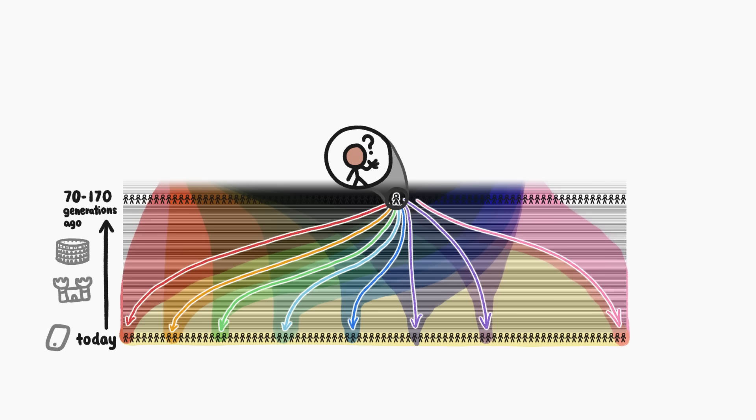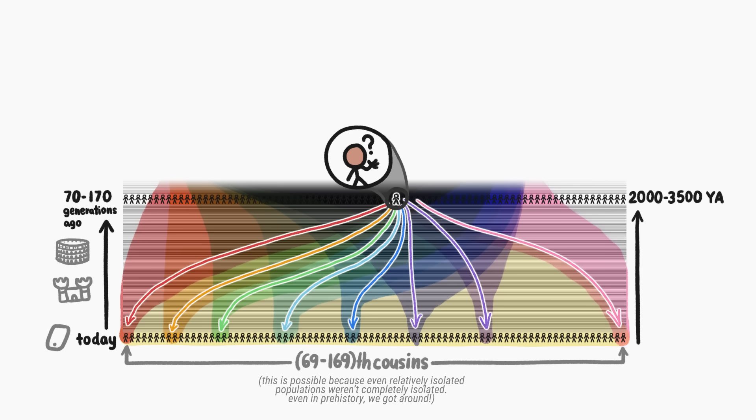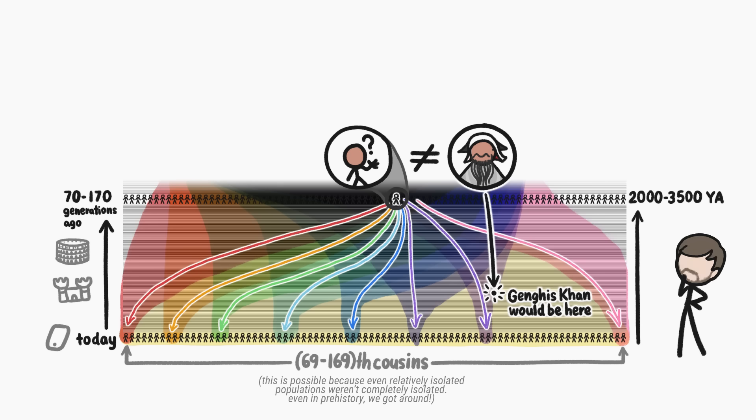Now, we don't know who this person was, but they are the ancestor that makes even the two most distantly related members of the current youngest generation related to each other. In terms of years, this person was alive between 2000 and 3500 years ago, which for one means it isn't Genghis Khan, but still isn't actually all that long ago.